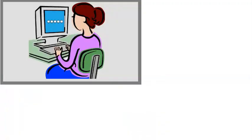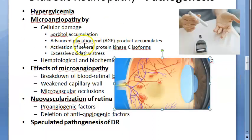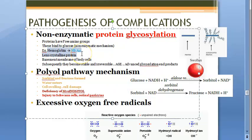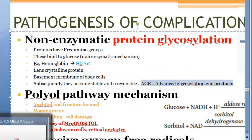Advanced Glycation End (AGE) products accumulate - that is proteins plus glucose. All these glycation products will accumulate. We already saw that hemoglobin gets glycosylation, the crystalline lens proteins can get glycosylated. Advanced glycosylation end products - nothing new for you, you have seen all these in previous videos.